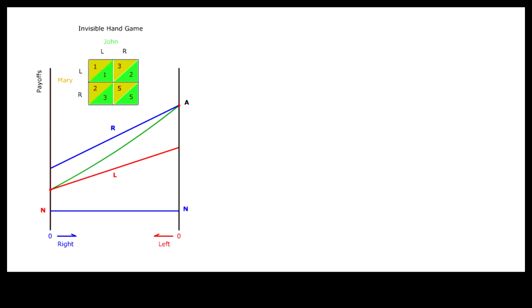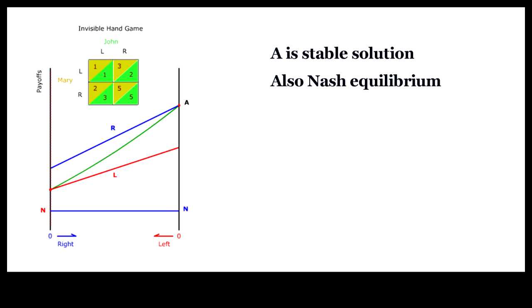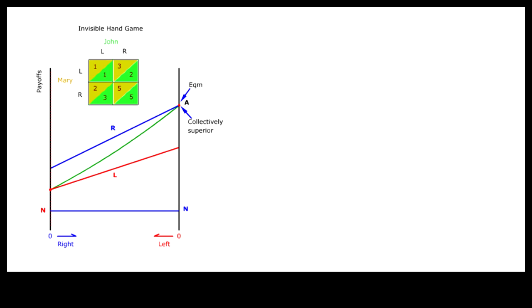The highest collective payoff occurs when everybody chooses R at point A. At this point, nobody has any incentive to choose L, so A is both a collectively superior and a stable equilibrium solution. In this invisible hand game, R represents the single-minded pursuit of self-interest, and L is the abstinence from such pursuit. Because there is no conflict between individual payoff and group payoff, the invisible hand situation is strictly speaking not strategic, but it is a good benchmark to compare with typically strategic situations.